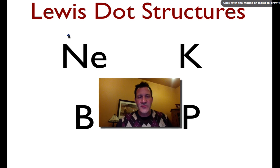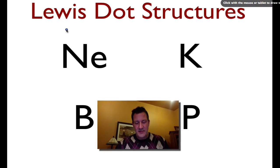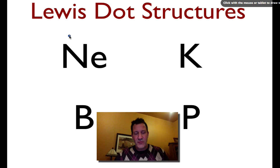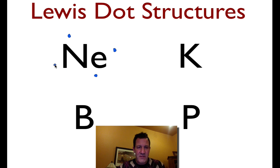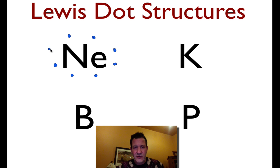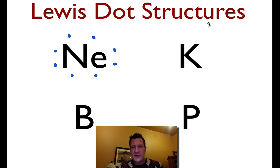The first one is neon. We know neon is a group 18 element, and therefore it has eight valence shell electrons. We draw them like this, and then we start to double them up to show that neon has a full octet — eight valence shell electrons. It's one of the noble gases, that's why it doesn't bond — it has a full outer shell.